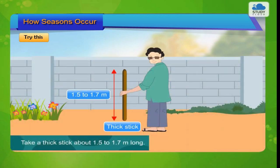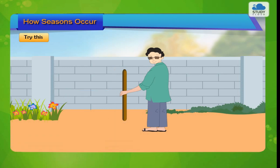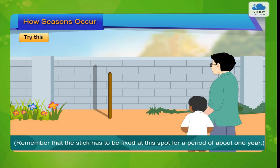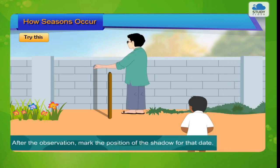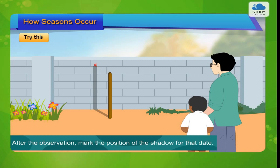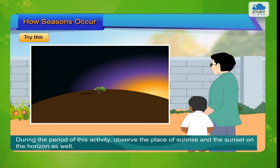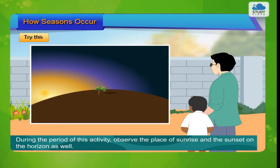Try this: Take a thick stick about 1.5 to 1.7 meters long. Keeping some distance, fix the stick near a wall that receives sunlight at the time of sunrise or sunset throughout the year. Remember that the stick has to be fixed at this spot for a period of about one year. After the observation, mark the position of the shadow for that date. If the position of the shadow changes, measure and note the distance between the earlier and the changed position. During the period of this activity, observe the place of sunrise and sunset on the horizon as well.